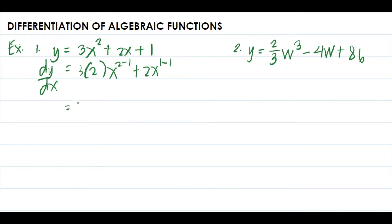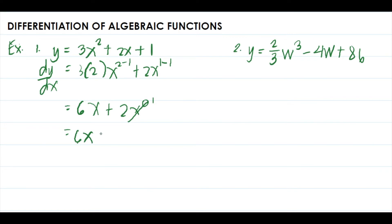So this equals 3 times 2, which is 6, times x to the power 2 minus 1, which is x to the 1. Plus 2 times x to the power 1 minus 1, which is x to the zero. Any variable raised to zero equals one, so this simplifies to 6x plus 2.